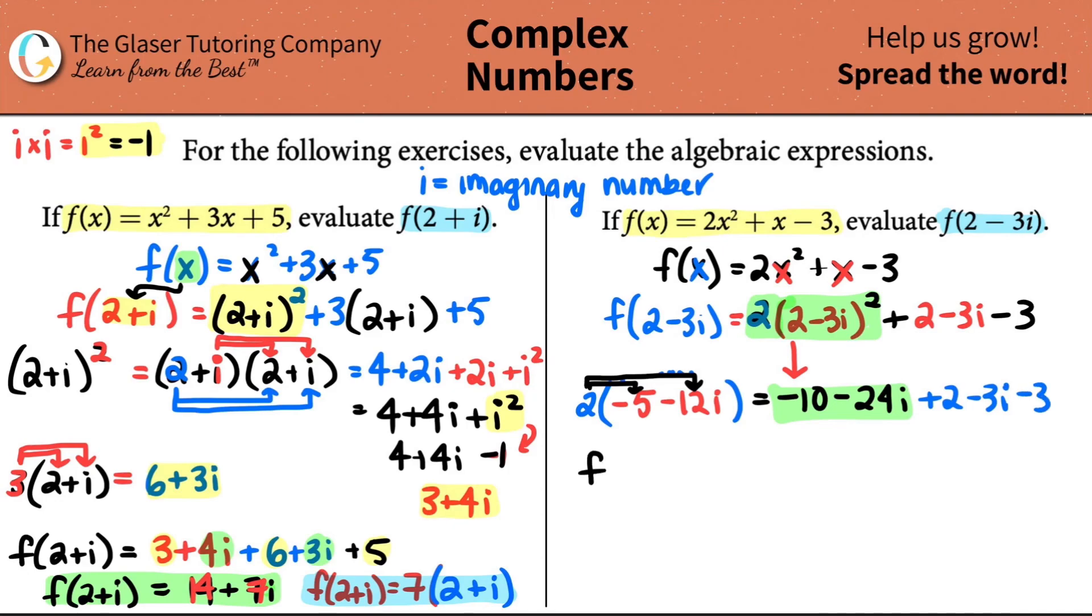So we now have f of 2 minus 3i is, let's see. I have a negative 10, a plus 2, and a minus 3. Negative 10 plus 2 is a negative 8. Negative 8 minus 3: 8, 9, 10, 11. Looks like it's a negative 11. 24i, negative 24i, minus 3i would be a negative 27i. And can we simplify this anymore? Absolutely not. This would be your final answer.